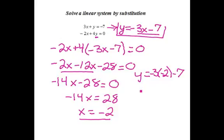Negative 3 times negative 2 is a positive 6. So the solution to my system is 6 minus 7 gives me my solution y equals negative 1.